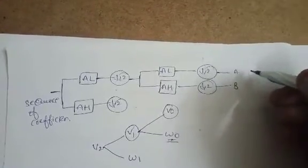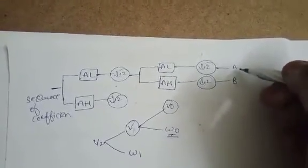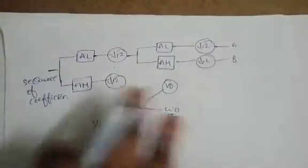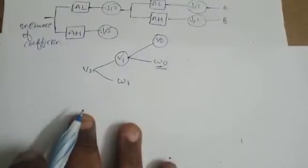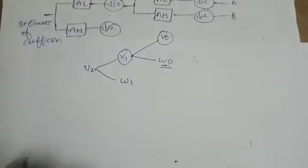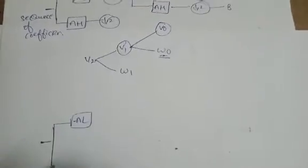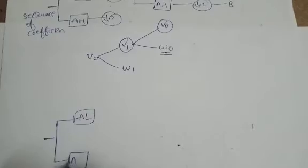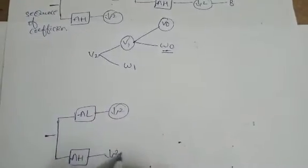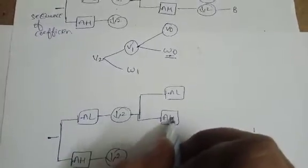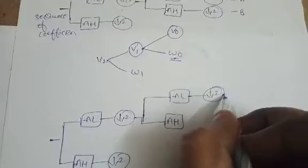These are approximation subspaces. Moving to the next level — the same sequence of input coefficients applies: analysis low-pass (AL), analysis high-pass (AH), and down-sampling, same as done previously.